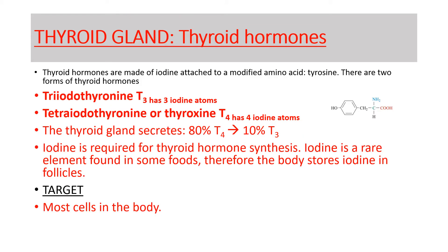Iodine, required to make thyroid hormones, is a rare element found in some foods like seafood. Because it is a rare element and not found in all foods, the body stores iodine in the follicles.